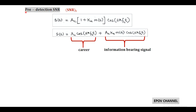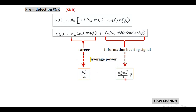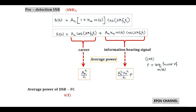In the pre-detection SNR, we have to determine average signal power. The average power of the first term is AC²/2, and that of the second term is AC²·KA²/2 · P, where P is the assumed average power of the message signal m(t). After adding, we get AC²/2 · (1 + KA²·P).